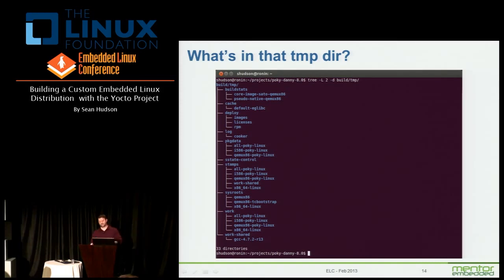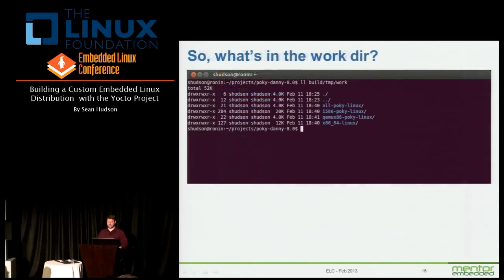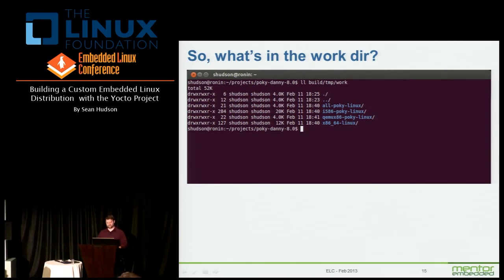Package data I found pretty useful because it describes a whole lot of information about the packages. But Work is really where the action is — this is where most of the stuff you'd probably be looking at is going to be. This is where source archives get extracted to, where shared state actually gets extracted to, where logs get generated, and also where the scripts that actually get run are put. The work directory is separated by target — you're looking at allpoky-linux, i586, QEMU-x86, and so on. Some of these are targeted towards the native host environment.